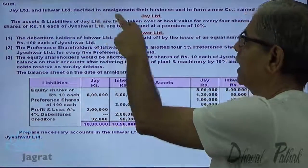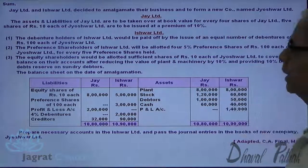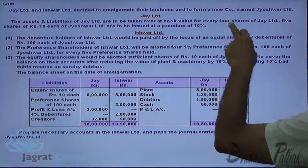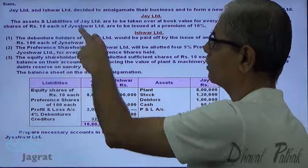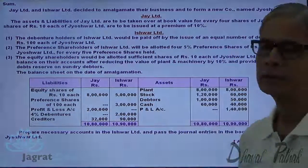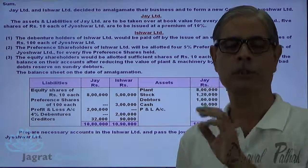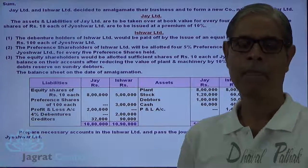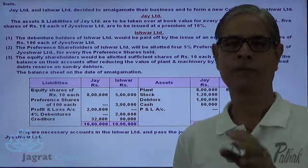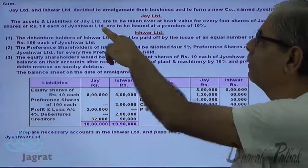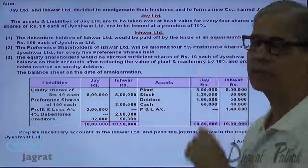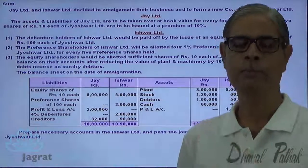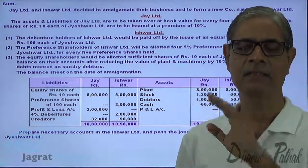Jai Limited and Ishwar Limited decided to amalgamate their business and form a new company named Jai Ishwar Limited. For Jai Limited, assets and liabilities are to be taken over at book value. For every four shares in Jai Limited, five shares of rupees 10 each of Jai Ishwar Limited are to be issued at a premium of 10%. So as per this terms and condition, the payment to be made is prescribed. Net assets are taken as per book value. If the payment made is in excess of the value of net assets, it will be identified as goodwill. And if the payment made is less than net assets acquired, it will be capital reserve.